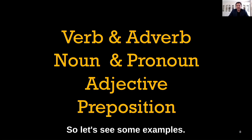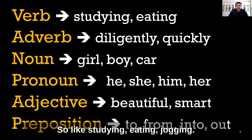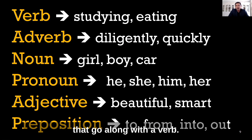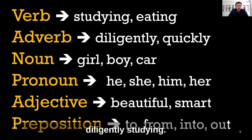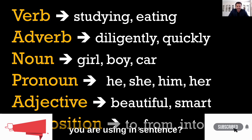Let's look at some examples. A verb, as you probably know, describes an action — like studying, eating, jogging. Adverbs are words that go along with a verb, for example, quickly eating or diligently studying. When using these terms, keep in mind what word you are using in your sentence and what adverb you are pairing with it.